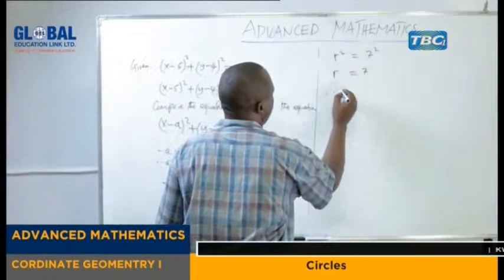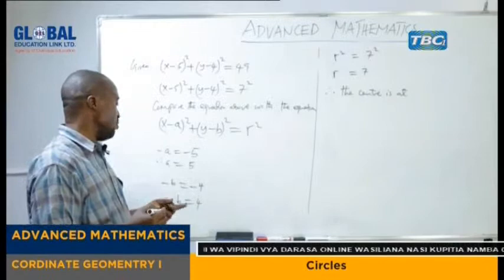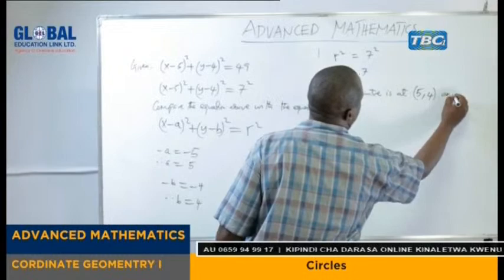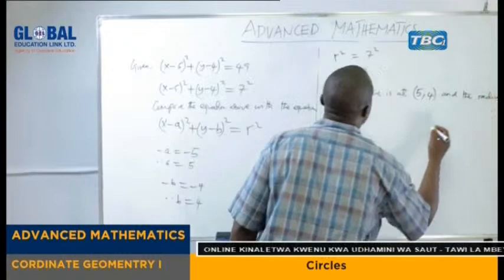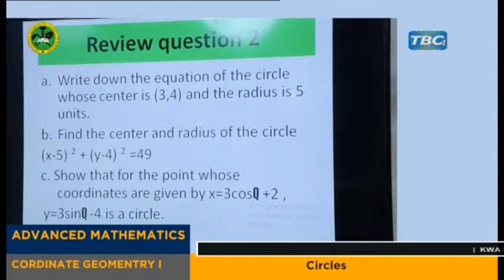Therefore the center is at (A, B), which is (5, 4). And the radius is 7. So that is how to find the center and the radius from such a kind of equation.